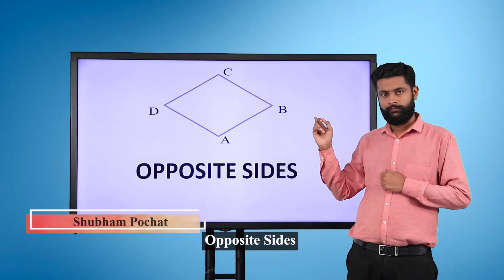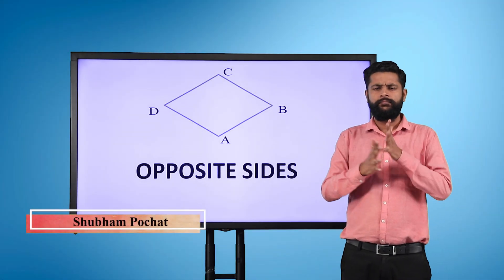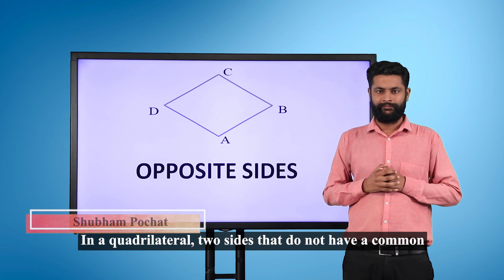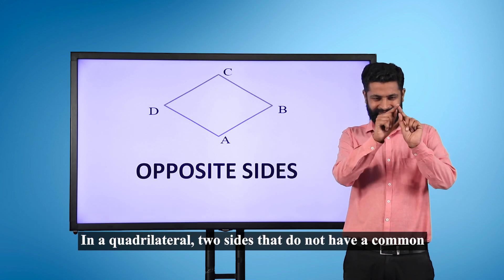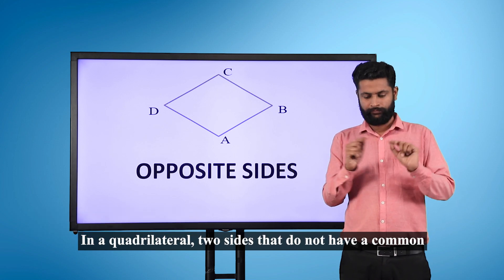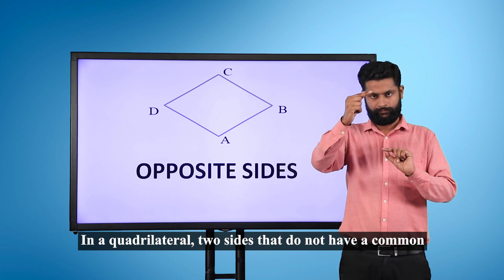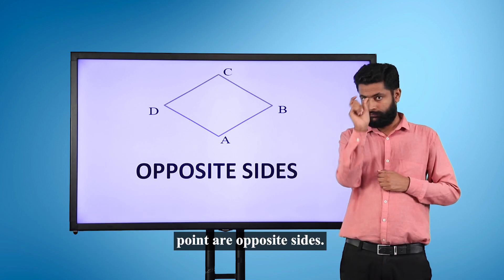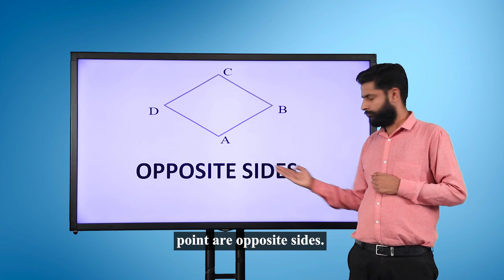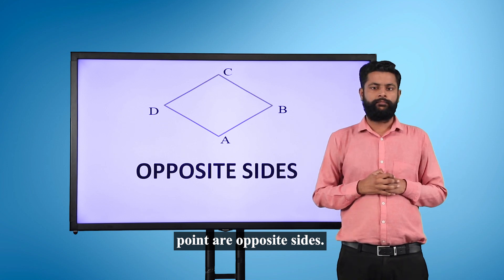Opposite Sides. In a quadrilateral, two sides that do not have a common point are opposite sides.